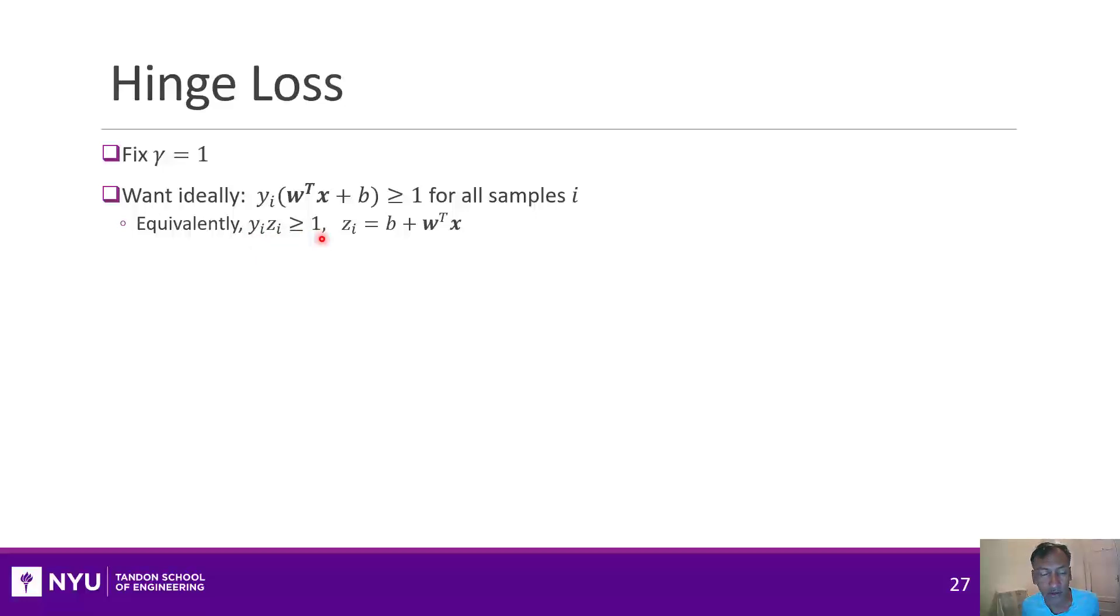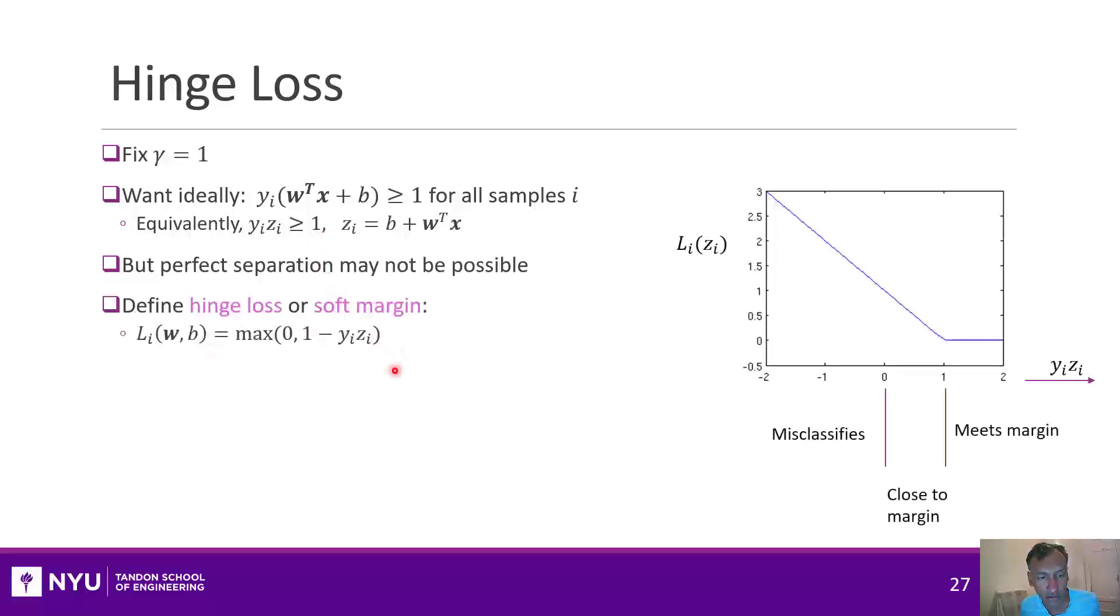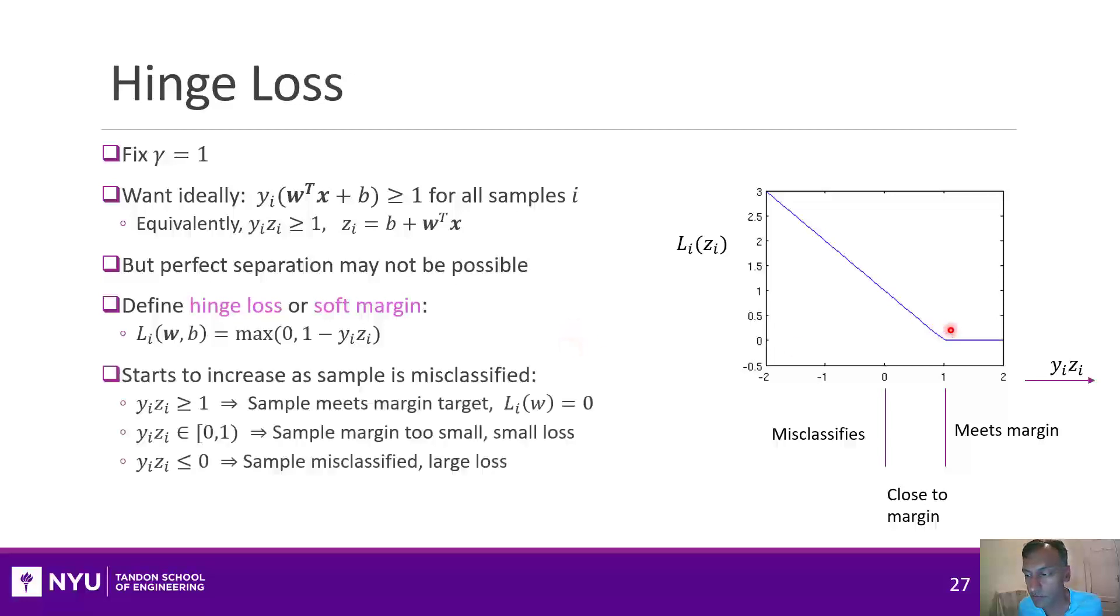But we know we can't always find such a classifier, so I'm going to define something called the hinge loss. The hinge loss is this weird function here, and it's drawn like this. When yi times zi is greater than one, the hinge loss is zero. I'm going to try to find somehow something that minimizes this hinge loss, so zero would be great. But the point is, I allow points to actually violate this constraint. But they'll just pay a penalty, and the penalty will be linearly proportional to that distance from that constraint.